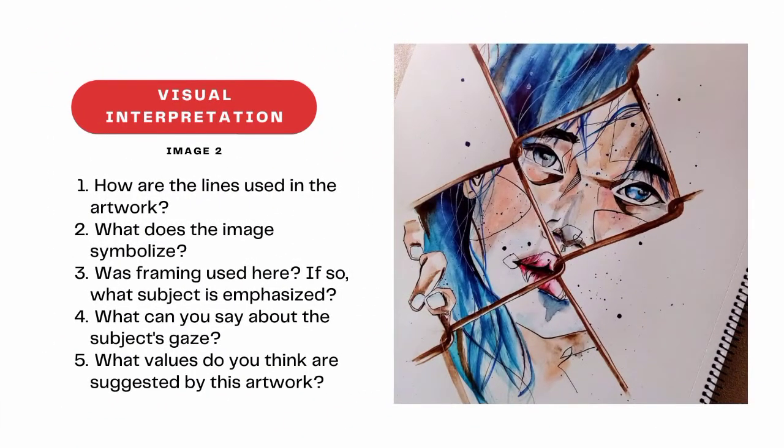Image two. Number one, how were the lines used in the artwork? Number two, what does the image symbolize? Three, was framing used here? If so, what subject is emphasized? Number four, what can you say about the subject's gaze? And five, what values do you think are suggested by this artwork?